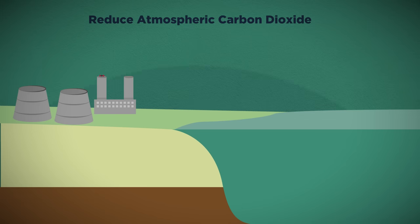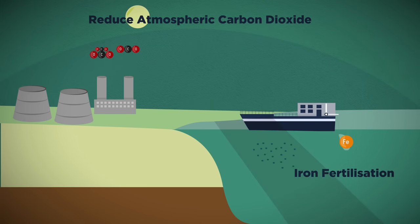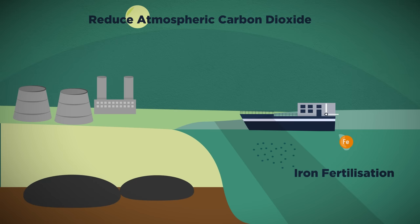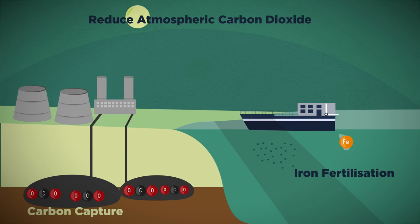So to summarise, to reduce atmospheric carbon dioxide we could seed the oceans with iron to stimulate algae growth, or we can try to capture it from power stations and then pump it underground. Much better we generate our energy without burning fossil fuels in the first place.